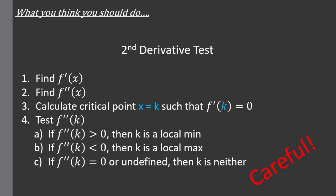If you're using the second derivative test, you need to first calculate the first and second derivatives and find the critical points x equal to k, then see how the second derivative behaves at those critical points. If the second derivative at the critical point is greater than zero, the concavity opens up so this critical point is a local min. If the second derivative is less than zero, this critical point is a local max. And if the second derivative is zero or undefined, then this critical point is neither.